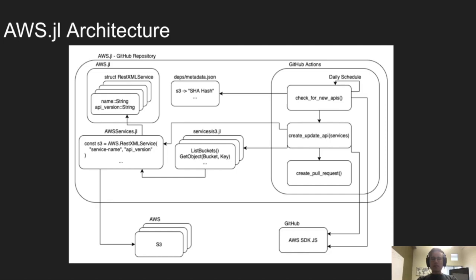Coming back to the tenets I mentioned before, I think this design hits on all three of them. It makes using AWS and Julia a lot easier for users since all the documentation is included in the individual service modules. It also uses as much code generation and automation as possible to keep services up to date and create definitions for new ones within 24 hours of any changes to the external dependency. And the design is pretty simple — there are only six components to it.